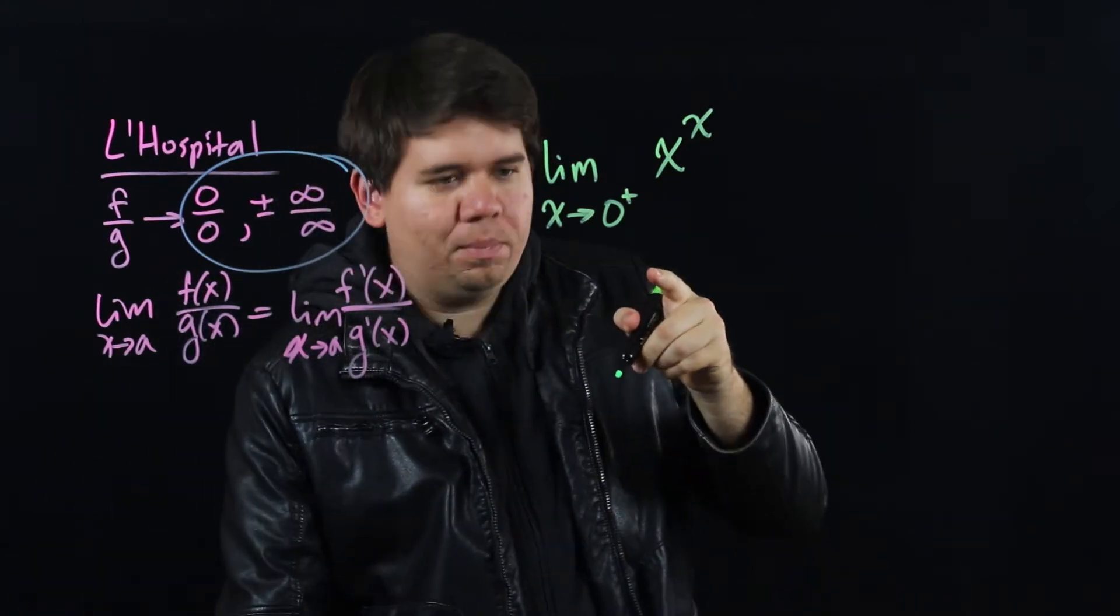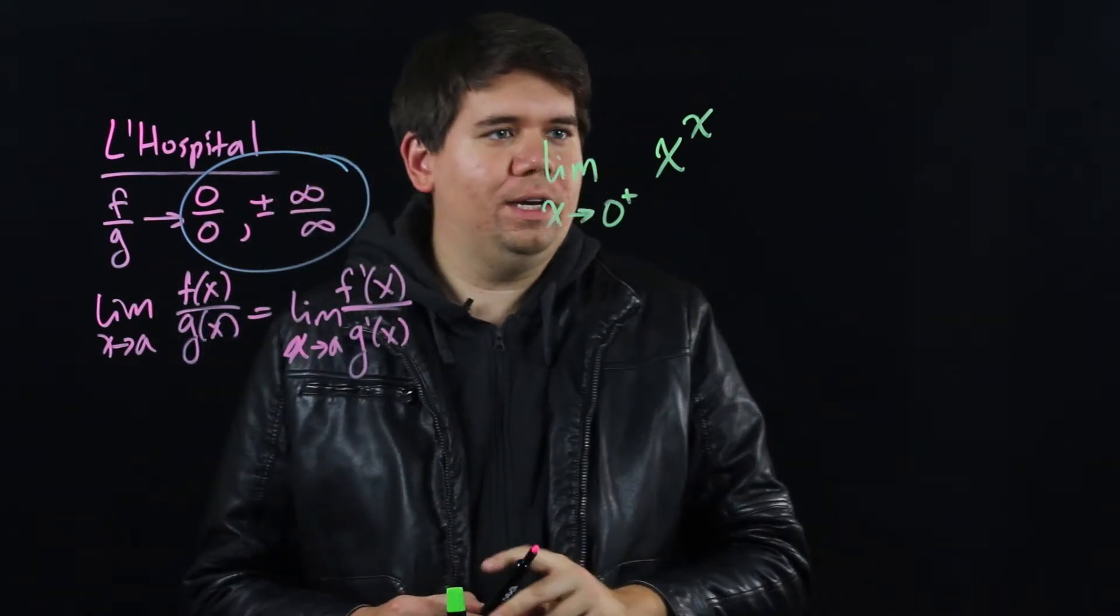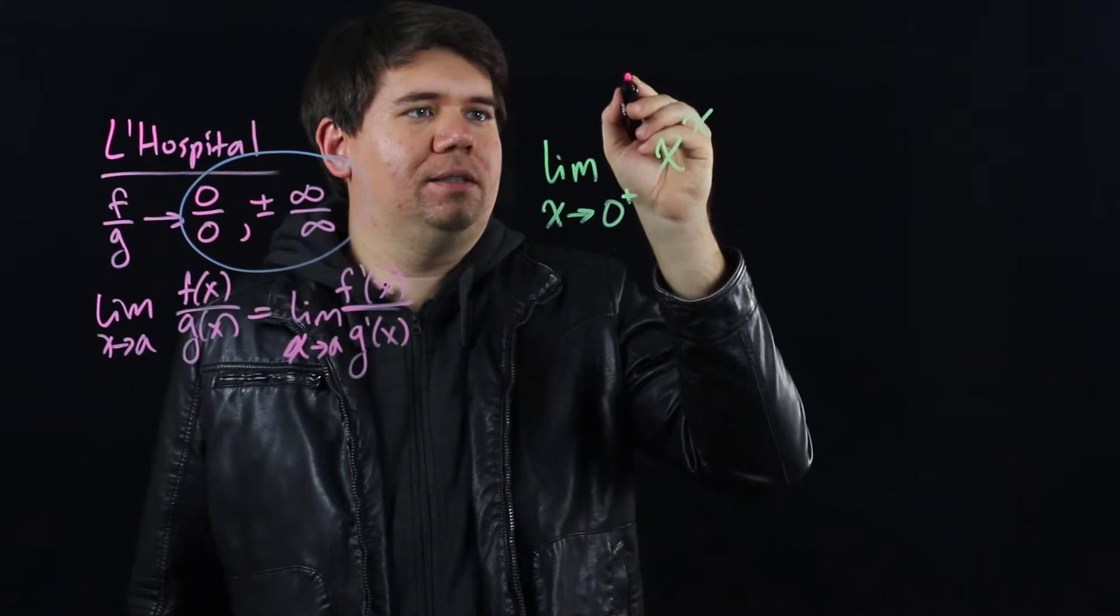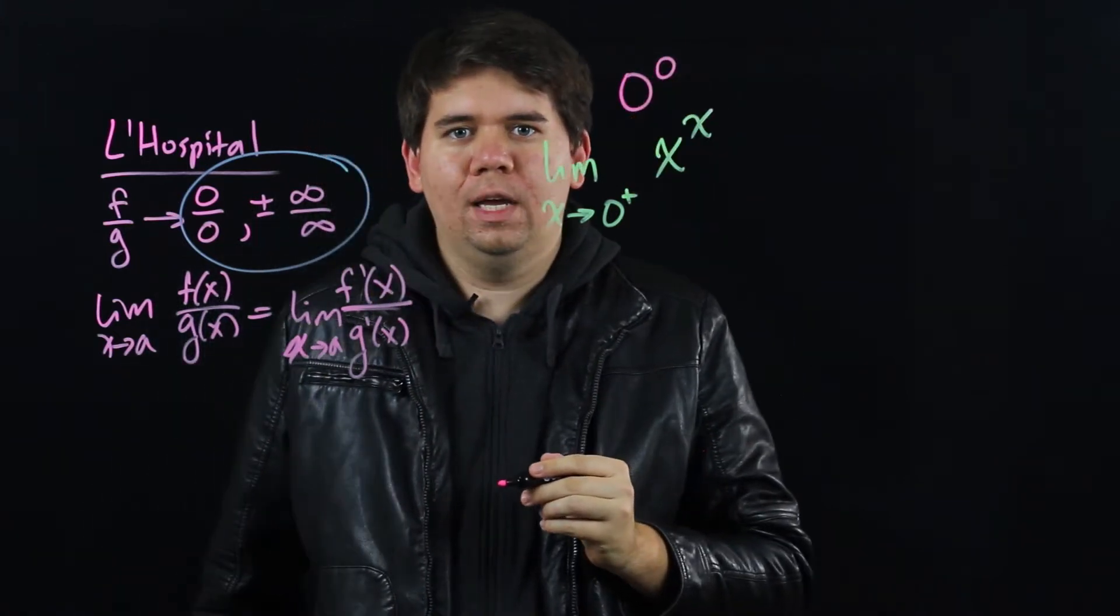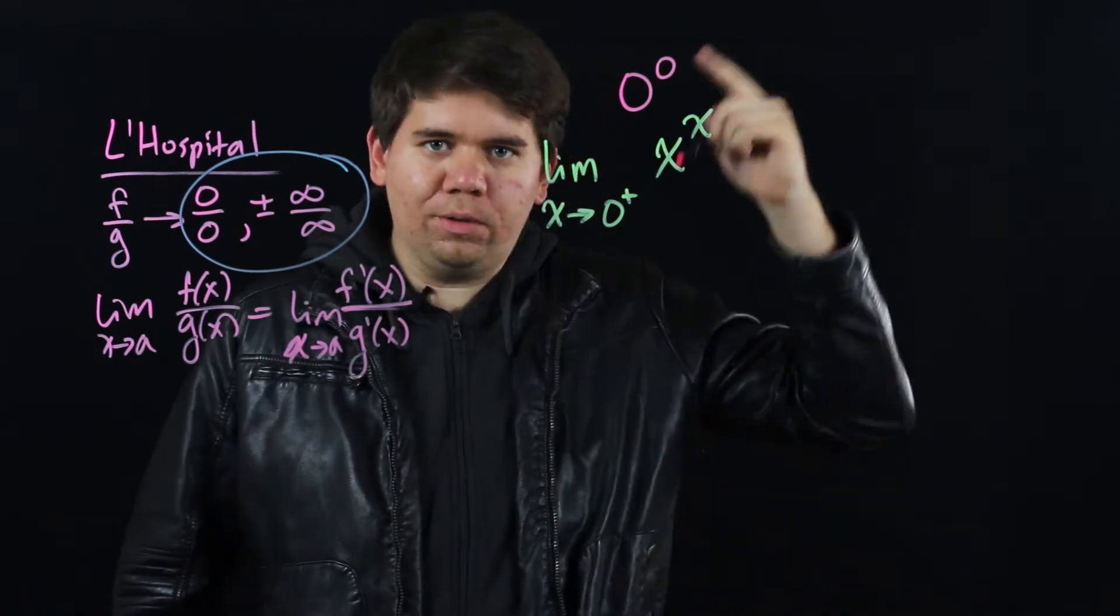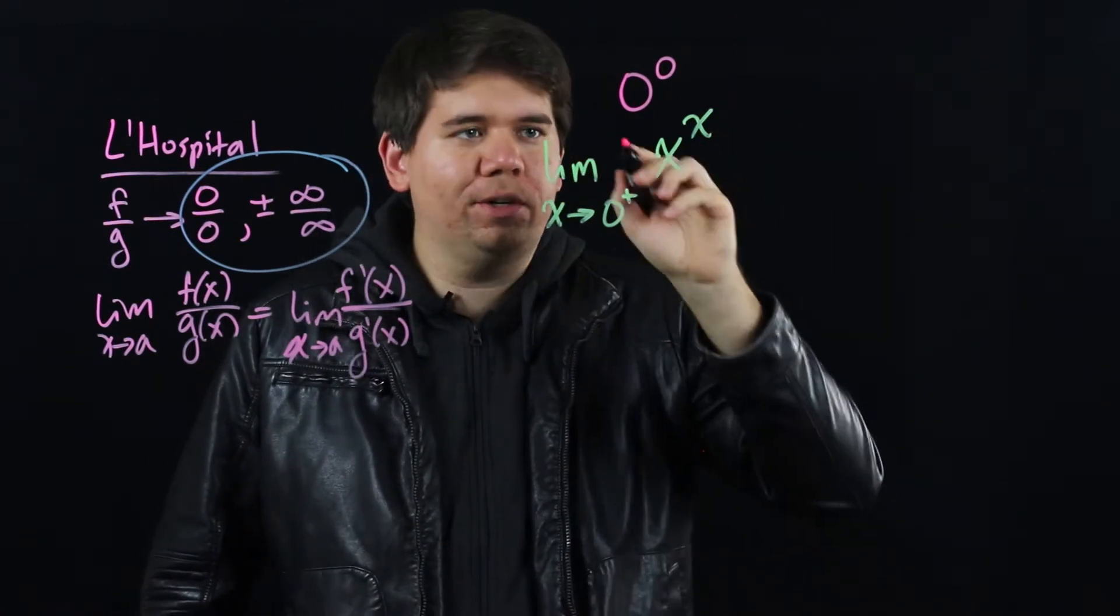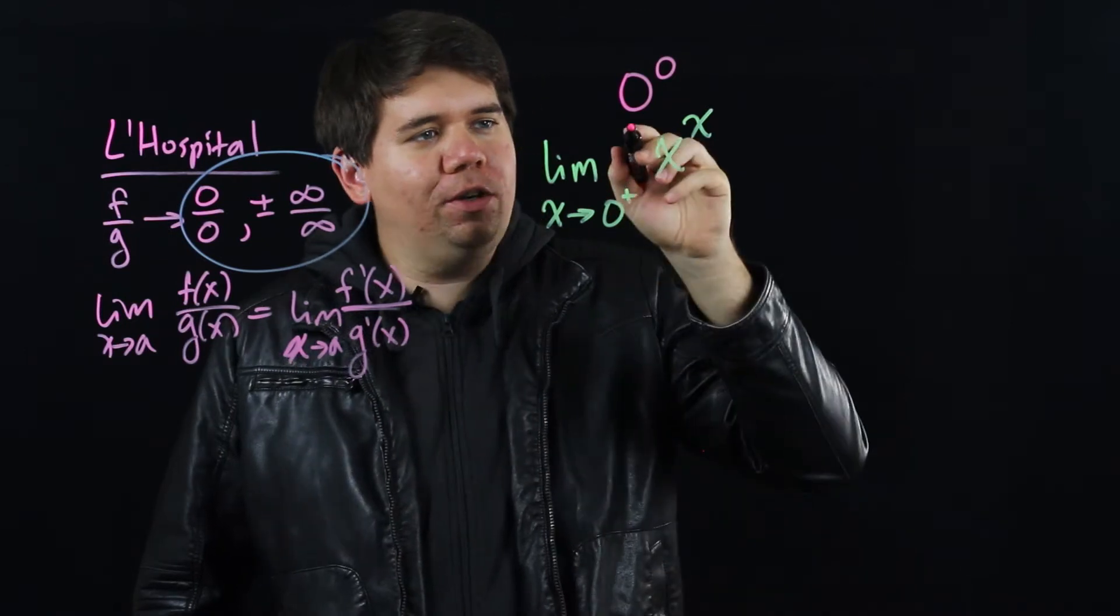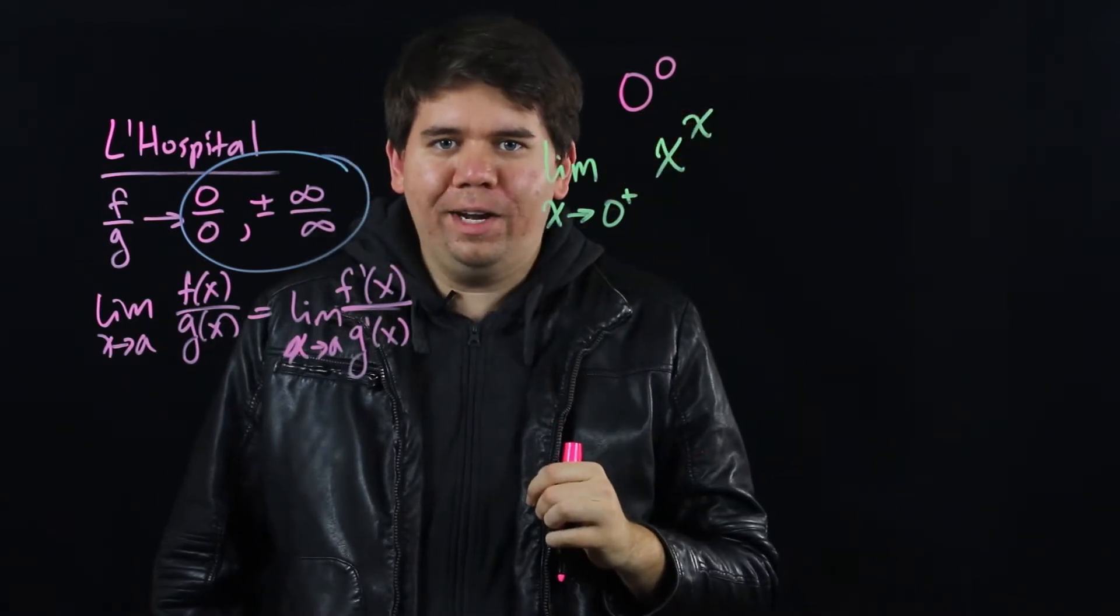Now again, if you just try and let the limit run, you end up with something of the form 0 to the 0. Now you might think that 0 to any power should be 0. That's true, 0 squared or 0 to the 10th or whatever is 0. But you also know that any number to the 0th power is 1. Right?